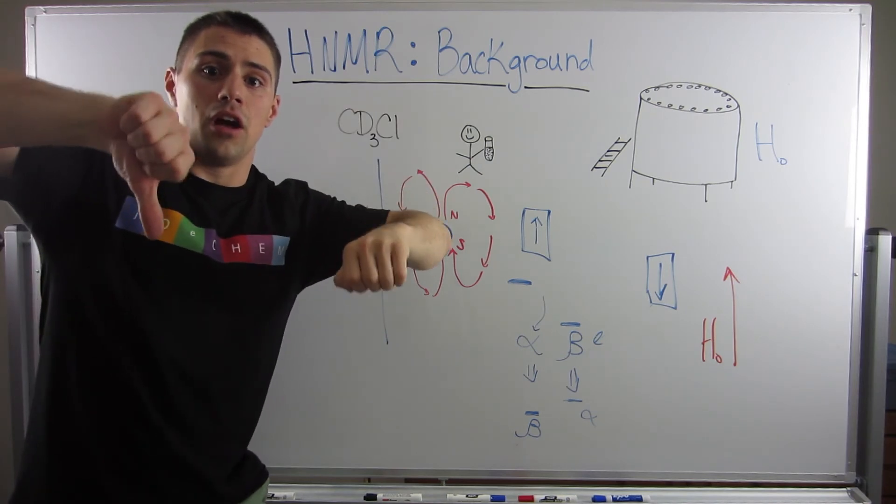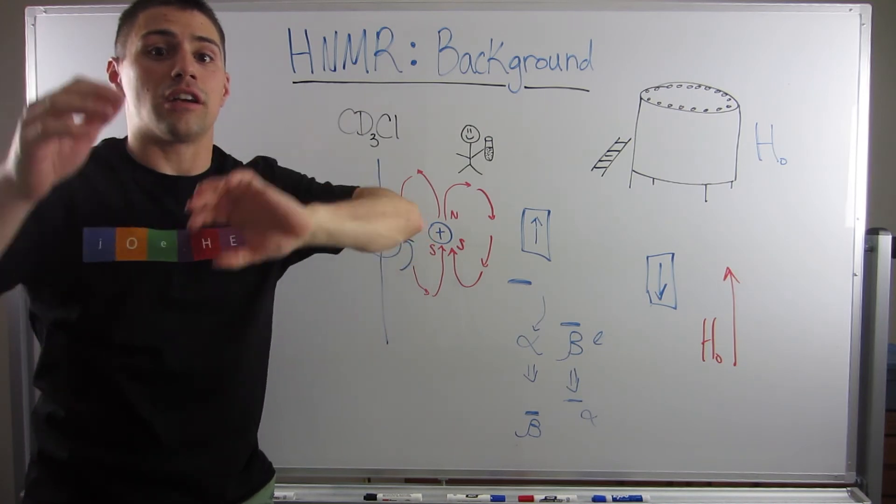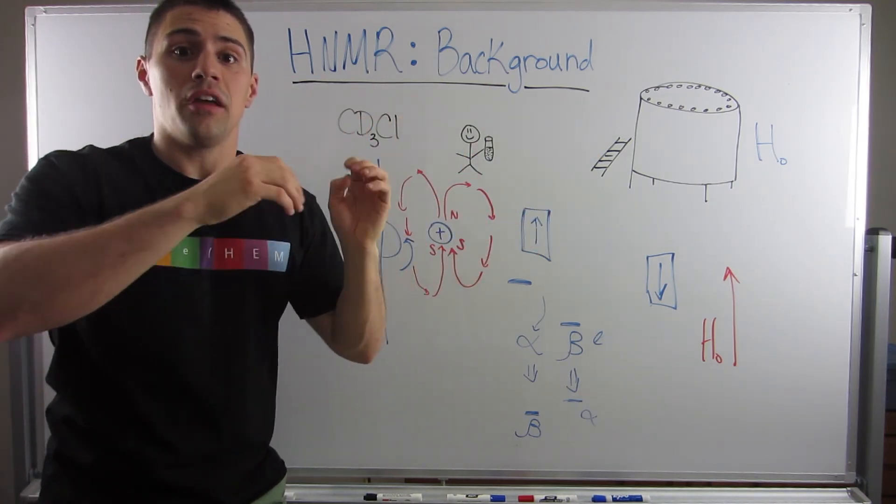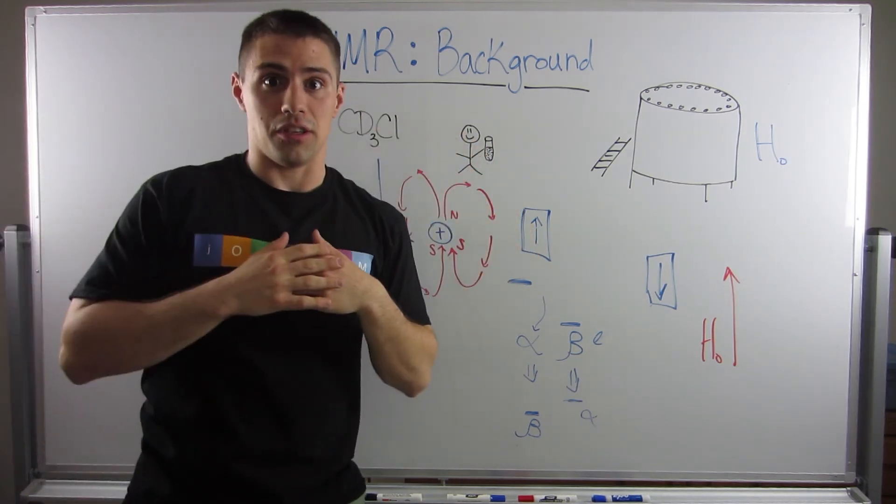Then you're going to have a constant excited, giving off energy, then gaining of energy to then be excited, giving off energy. You're going to have that back and forth. The energy given off is seen at a certain frequency, which the machine will then show you on a spectrum, which we will get to.